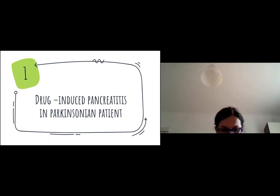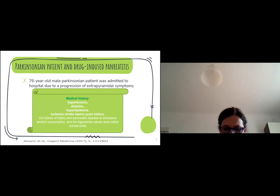I would like to present two distinct cases of acute pancreatitis in Parkinsonian patients. The first patient who had been treated with multiple medications suffered from drug-induced pancreatitis. He's a 76-year-old male Parkinsonian patient admitted to hospital due to progression of extrapyramidal symptoms and need for titration of anti-Parkinson's therapy. His medical history included hypertension, diabetes, hyperlipidemia, and ischemic stroke. He had no history of biliary or cardiac disease, alcohol consumption, and his triglyceride values were within normal limits.